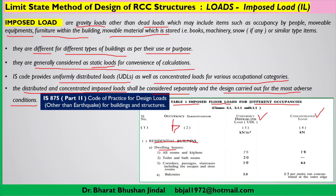For dwelling houses — all rooms and kitchens — you can take UDL as 2 kN per meter square and 1.8 kN for concentrated load. The unit for concentrated load is kilonewton and for UDL it is kilonewton per meter square. IS 875 Part 1 is referred for dead loads and IS 875 Part 2 is referred for imposed loads for buildings and structures.